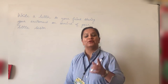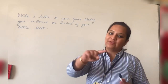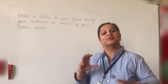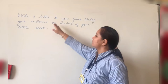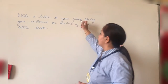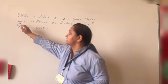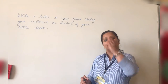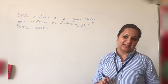We all know that first of all we always write the sender's address. So before we write, let us first read the question and find out who is the sender and who is the receiver. It says you have to write a letter to your friend sharing your excitement. It means you are writing a letter to your friend, so you are the sender and your friend is the receiver.